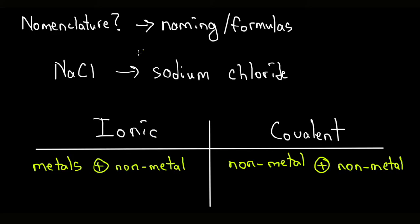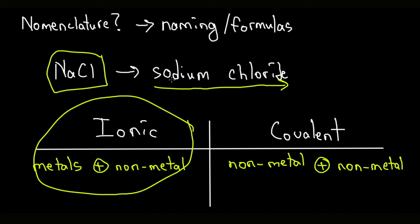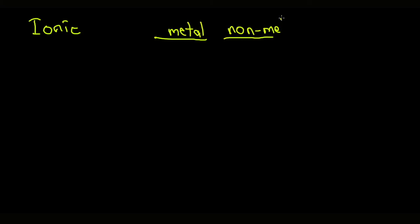First, you need to identify: is this ionic or is this covalent? From there we'll be able to do our naming of that compound. The naming for ionic compounds is going to be quite simple. You're just going to have your metal name, then write your non-metal name as it specifies on the periodic table, and also add an IDE ending to the non-metal.